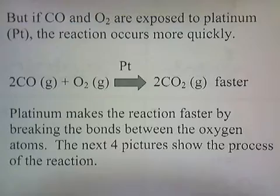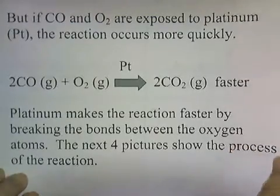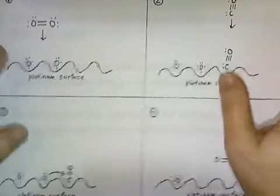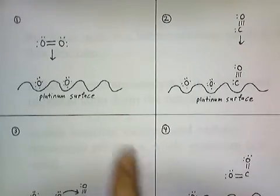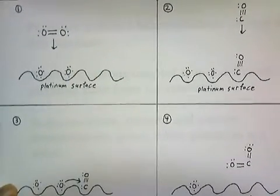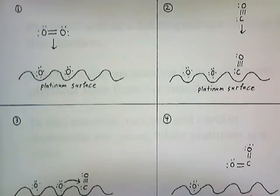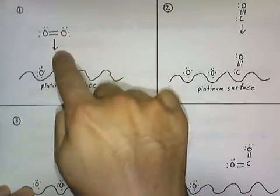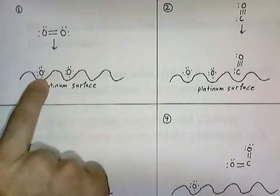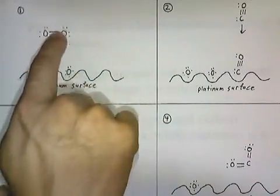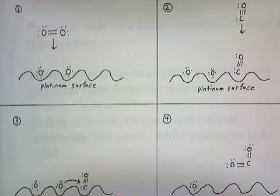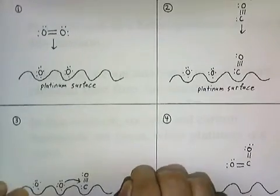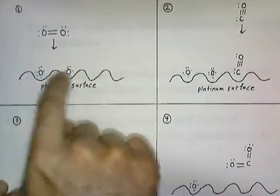The next four pictures show the process of this reaction. In the first picture, an oxygen molecule lands on the surface of platinum. The oxygen floats down and nestles onto the surface. The oxygen atoms are attracted to the surface of platinum, and a partial bond is formed between the platinum surface and the oxygen atoms. This bond is strong enough to break the bonds between the oxygen atoms, so the oxygens are now separated into individual atoms.